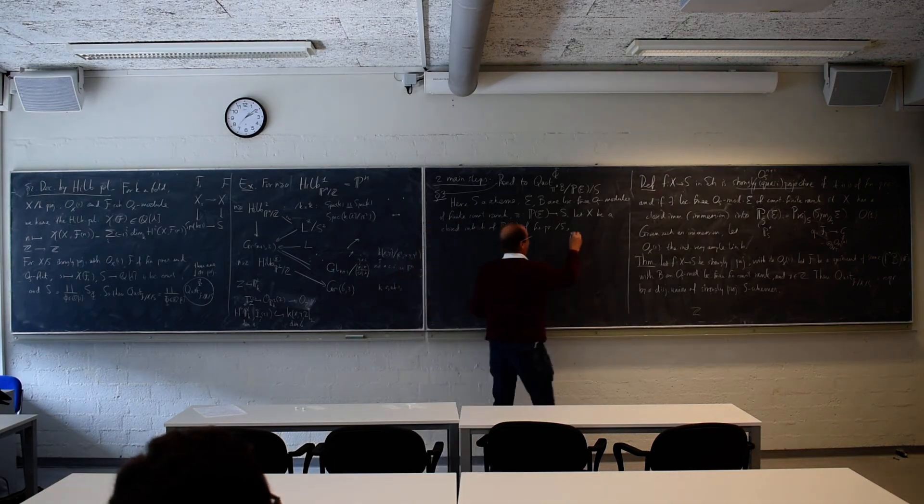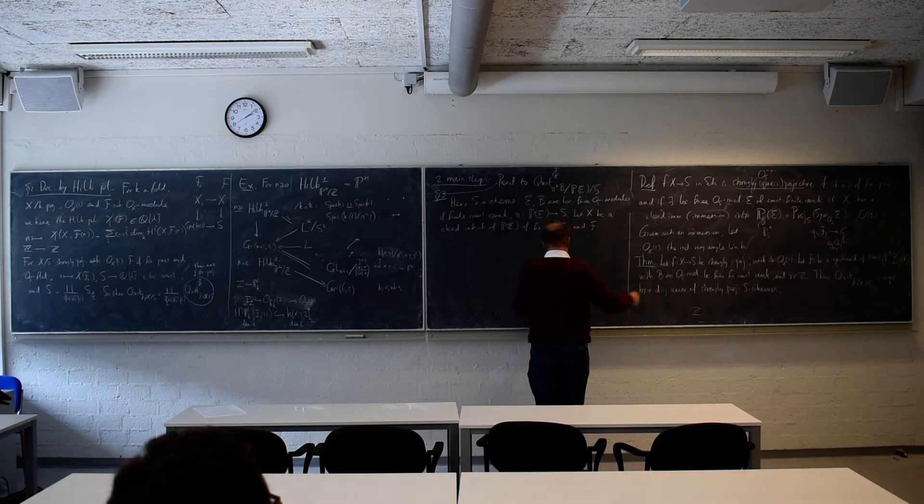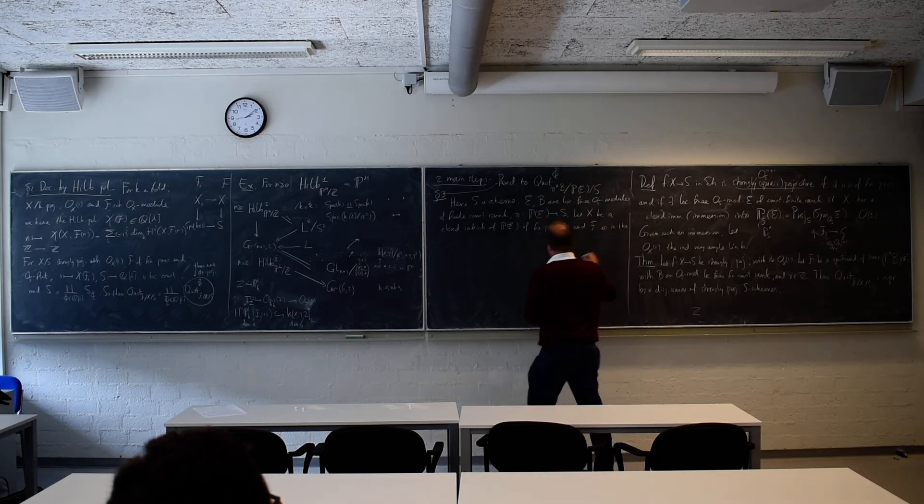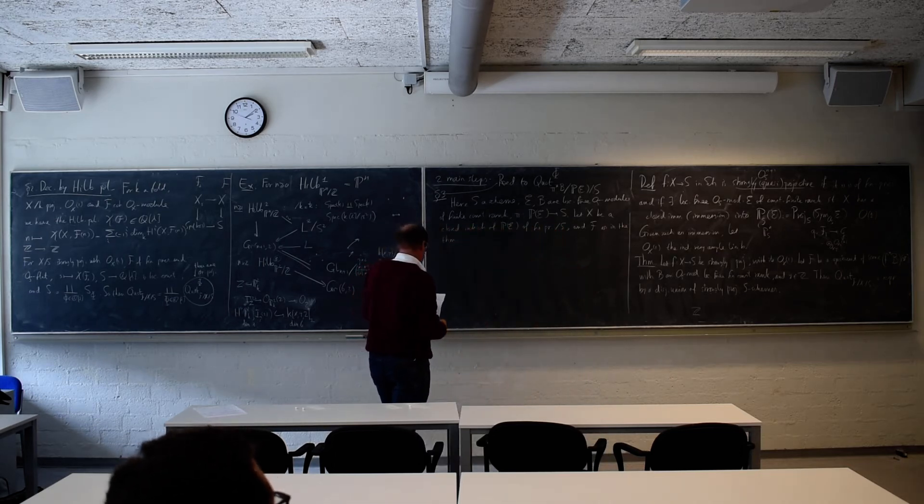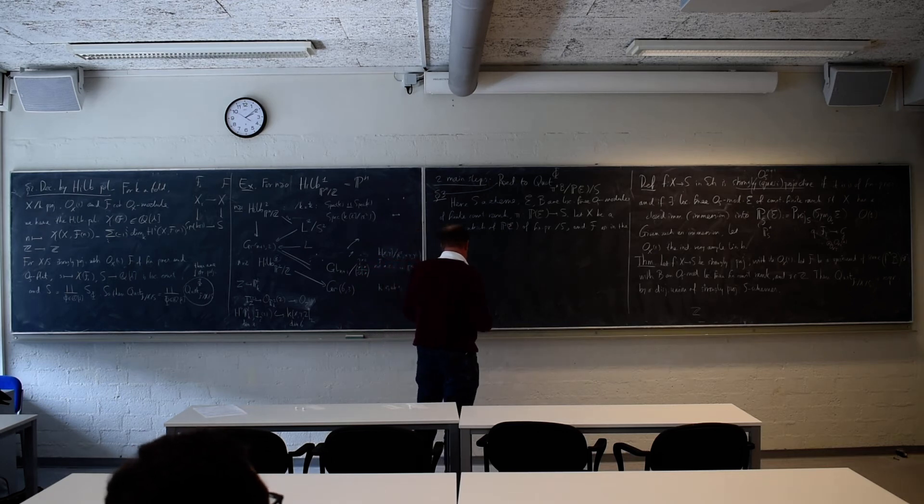So those... Oh, and now I still need f. Because I want to reduce the general situation to that, right? So here I think we had the general situation. And here we had a quot of f over x over s. And this x was already inside sort of the projective space bundle, right?